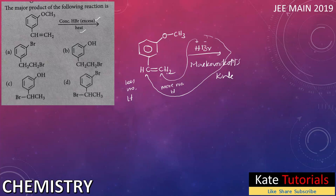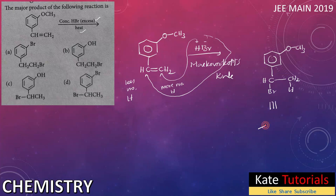The negative part, Br minus, attacks the carbon which has fewer hydrogens, while H+ attacks the carbon with more hydrogens. So initially we had a CH=CH2 group; after Markovnikov addition we get CH(Br)-CH3, with the double bond becoming a single bond. The product so far is: benzene-O-CH3 with a -CH(Br)-CH3 side chain.